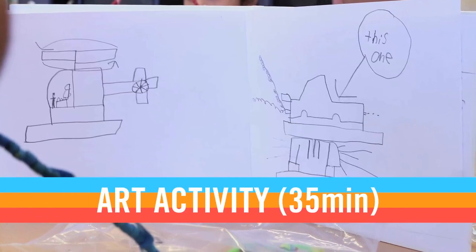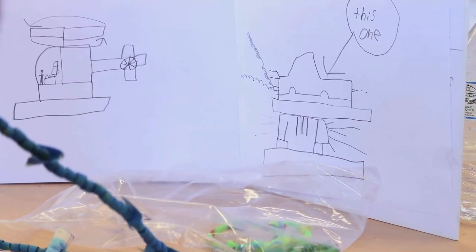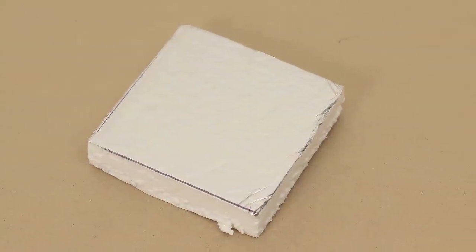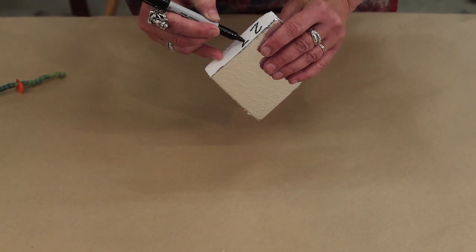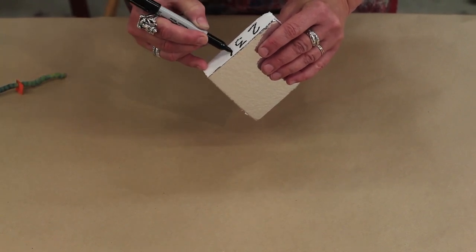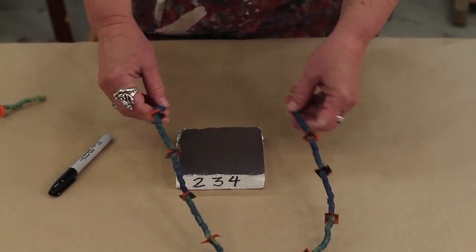Once your students have explored different shapes for their sculpture, pass out the squares of insulation foam. This is the base for their sculptures. On their foam bases, tell your students to write out their three-digit number. On the bottom, they could also write out the number in standard, expanded, and word form too.